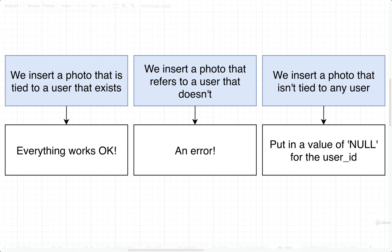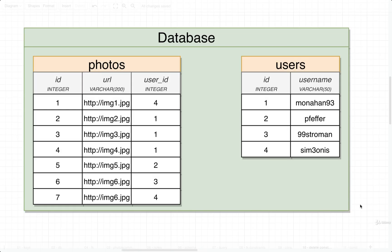We've now taken a look at how inserting records plays with foreign keys, so now we're going to take a look at the exact opposite operation — what happens when you try to delete some record that involves a foreign key. Inside our database, we've got a photos table and a users table, and inside photos there are three different photos that are all associated with the user that has ID number 1.